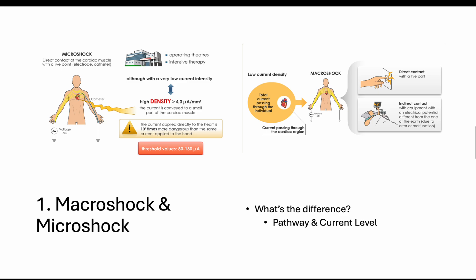Whereas macroshock, as you can see from the figure, travels from hand to the opposite hand. This doesn't happen through surgical procedures; this normally happens through direct contact with a live part, as you can see from that finger touching the mains, or through indirect contact when a patient is connected to a monitoring system. This could be due to a fault within the system that allows it to have an electrical potential difference from the monitor to the patient.